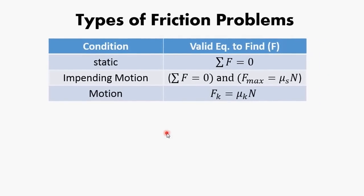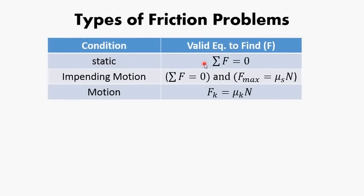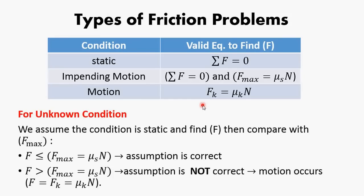Here are the types of friction problems. If the problem states the condition — for example, if it is static — we can apply the equations of equilibrium to find the frictional force. If the condition is impending motion, in addition to the equations of equilibrium, we can also apply the formula F_s_max = μ_s × N. When motion occurs, the only valid equation is F_k = μ_k × N. If the condition is unknown, we must assume the block is static, then apply the equations of equilibrium to find the frictional force and compare it to F_max to check the validity of our assumption.